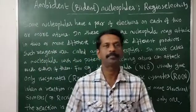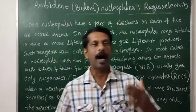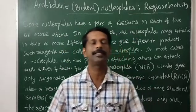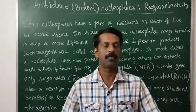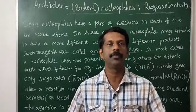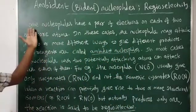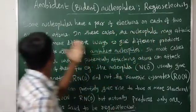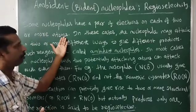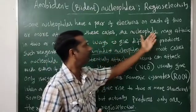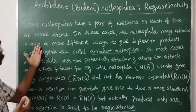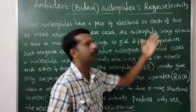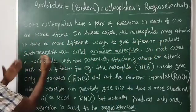Good morning. Next is ambident or bident nucleophiles and regioselectivity. What are ambident nucleophiles? Some nucleophiles have a pair of electrons on each of two or more atoms. In these cases, the nucleophile may attack in two or more different ways to give different products.